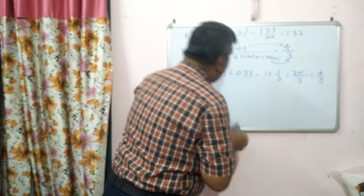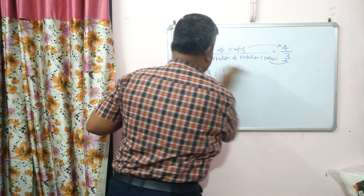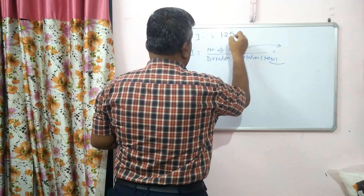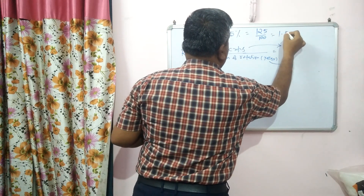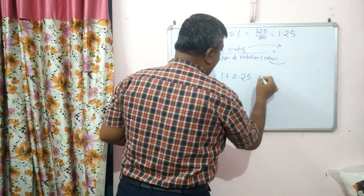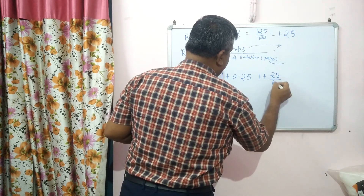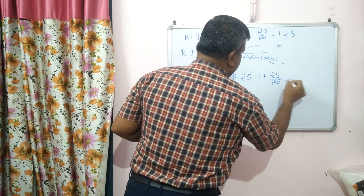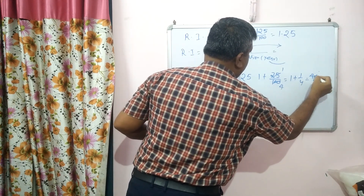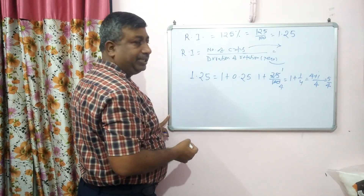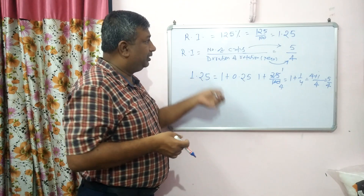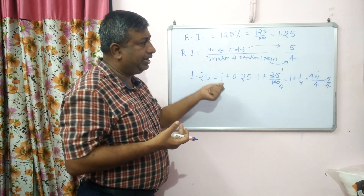If rotation intensity is 125 percent, then 125 divided by 100 equals 1.25. Convert: 1 plus 0.25, and 0.25 equals 25 upon 100, which simplifies to 1 upon 4. So it is 1 plus 1 upon 4. Taking LCM of 4: 4 plus 1 upon 4 equals 5 upon 4. So 125 percent means 5 crops are grown in 4 years.